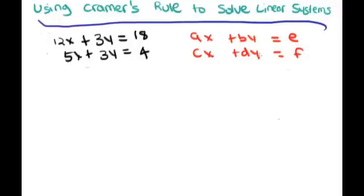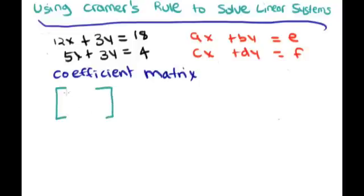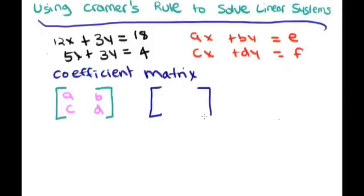Based on this we create a coefficient matrix. The coefficient matrix is a two-by-two matrix with four values — one for each coefficient. We put a and b in the first row and c and d in the second row, with x-coefficients on the left and y-coefficients on the right. For our equation, the coefficient matrix is: 12, 3 on top and 5, 3 on the bottom.